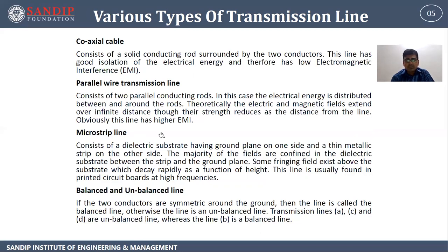Microstrip line consists of a dielectric substrate having a ground plane on one side and a thin metallic strip on the other side. The majority of fields are confined in the dielectric substrate between the strip and the ground plane. Some fringing fields exist above the substrate which decay rapidly as a function of height. This line is usually formed in printed circuit boards at high frequencies.